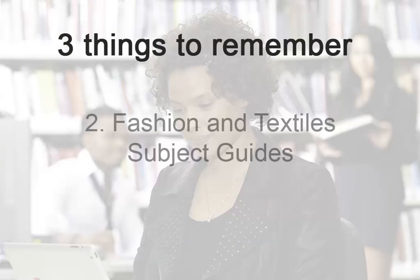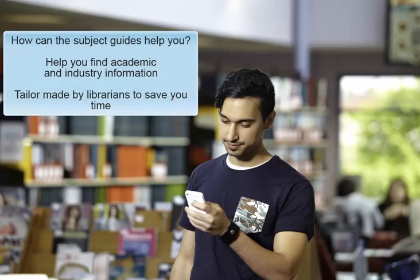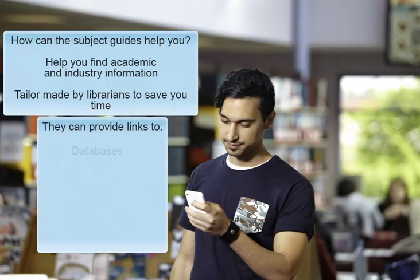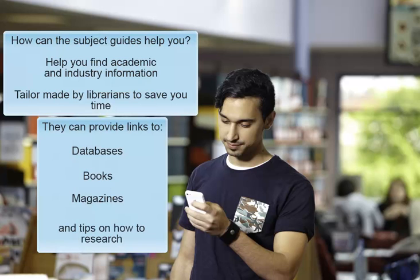Let's take a look at the fashion and textiles subject guide. Subject guides contain high quality academic and industry information that are tailor-made by librarians to save you time. You will find links to relevant databases, book titles, and even magazines. They also give you tips on how to actually do your research.